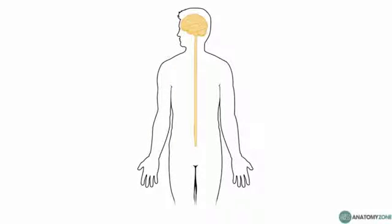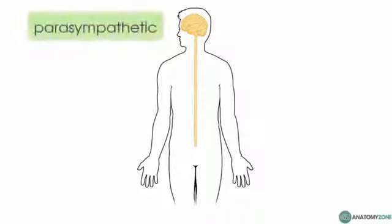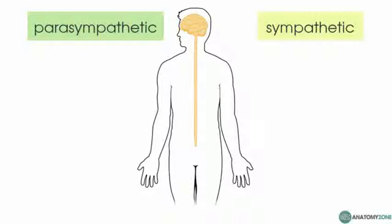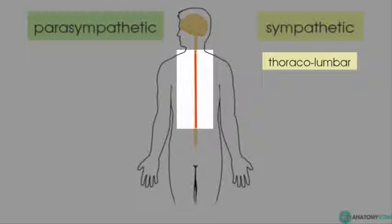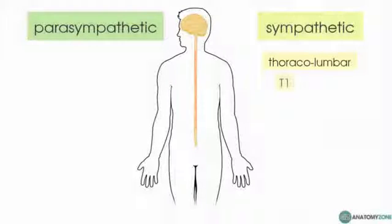The autonomic nervous system consists of two main divisions: the parasympathetic and the sympathetic nervous system. These are functionally and anatomically distinct and the functions are often antagonistic, which means they often do opposite things to each other. In terms of location, the sympathetic outflow originates in the thoracolumbar regions of the spinal cord, extending from spinal segments T1 to L2.